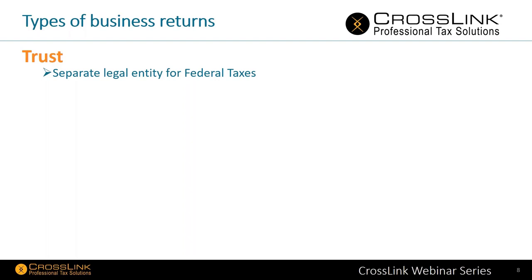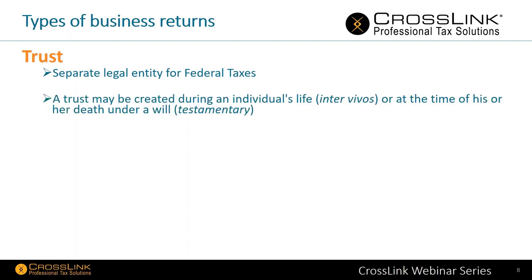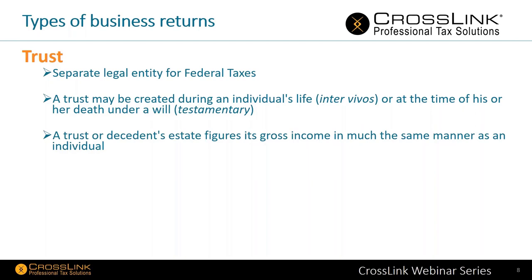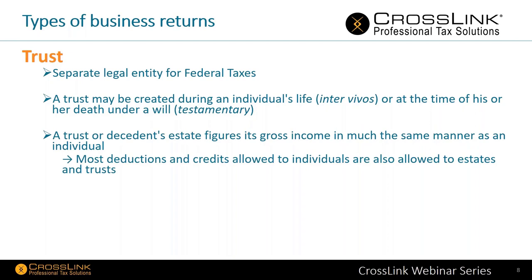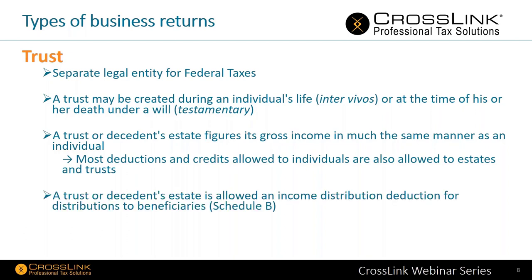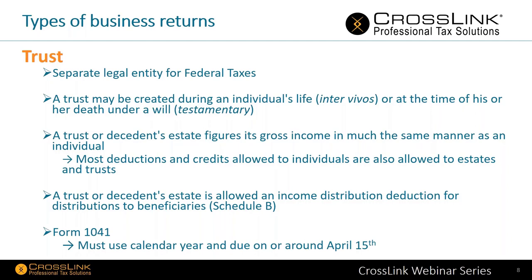A trust is a separate legal entity for federal tax purposes. It may be created during an individual's life or at death under a will. A trust or descendant's estate figures its gross income similarly to an individual — most deductions and credits allowed to individuals are also allowed to a trust. The trust is allowed an income distribution deduction for distributions to beneficiaries. This is done on Schedule B using Form 1041, and the due date is on or around April 15th.